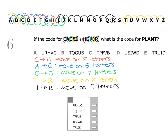Now let's work out the code for PLANT. We have P, and the first thing we need to do is move on five letters. P is here — moving on five letters brings us to the letter U. Secondly, we have L. L is here and this time we're moving on six letters — one two three four five six — bringing us to the letter R.